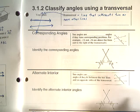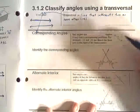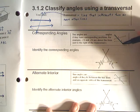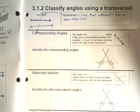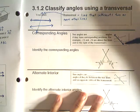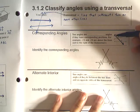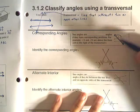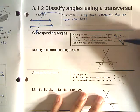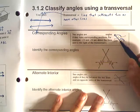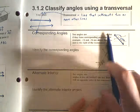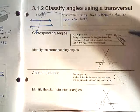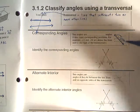The first definition is corresponding angles. You can see here this is the transversal line. Corresponding angles exist at the same part of the intersection when you look at two different intersections. This angle right here is in the upper right-hand corner of this intersection, and the same with angle 6, which is also in the upper right-hand corner of its intersection. So those two are called corresponding.